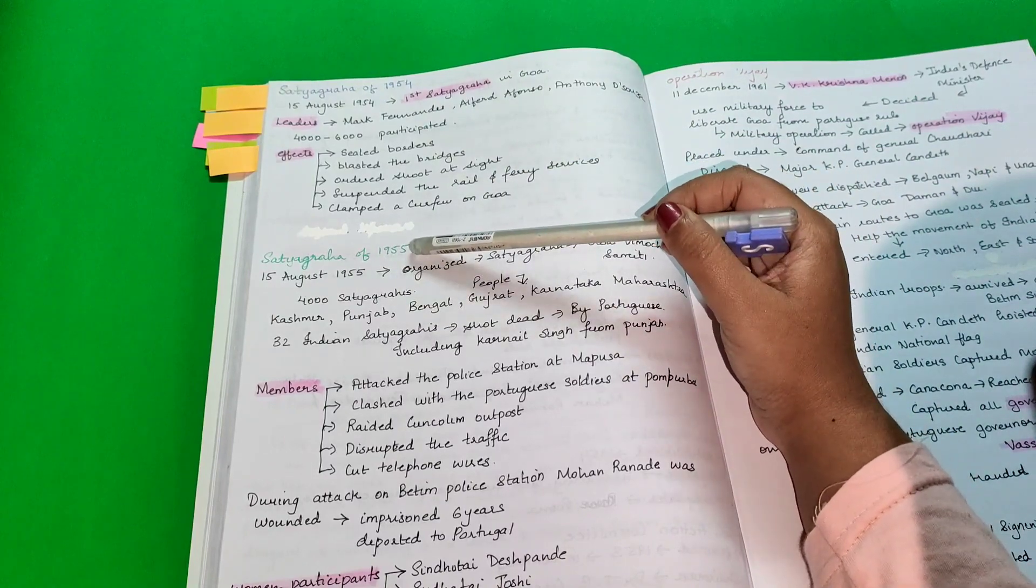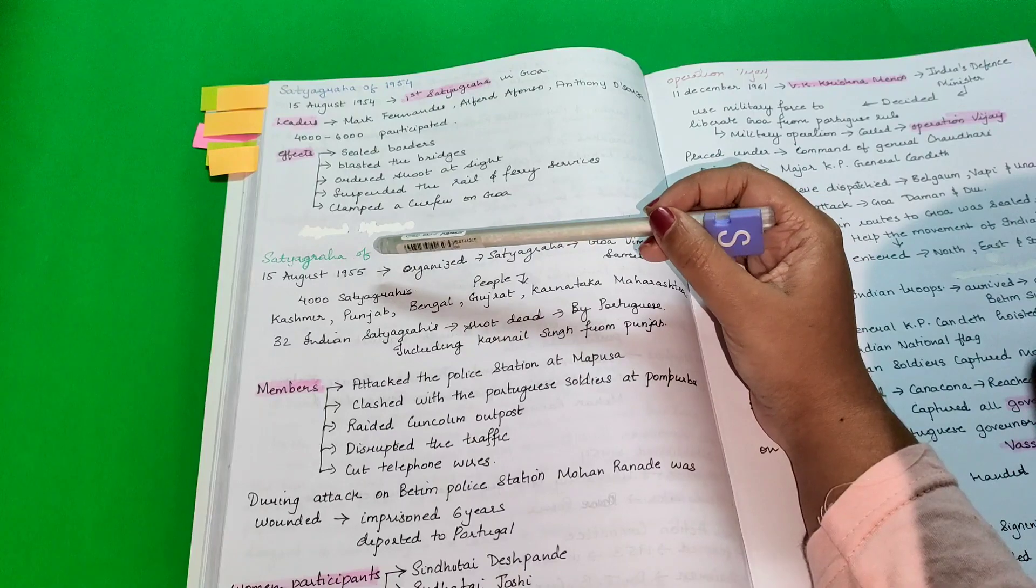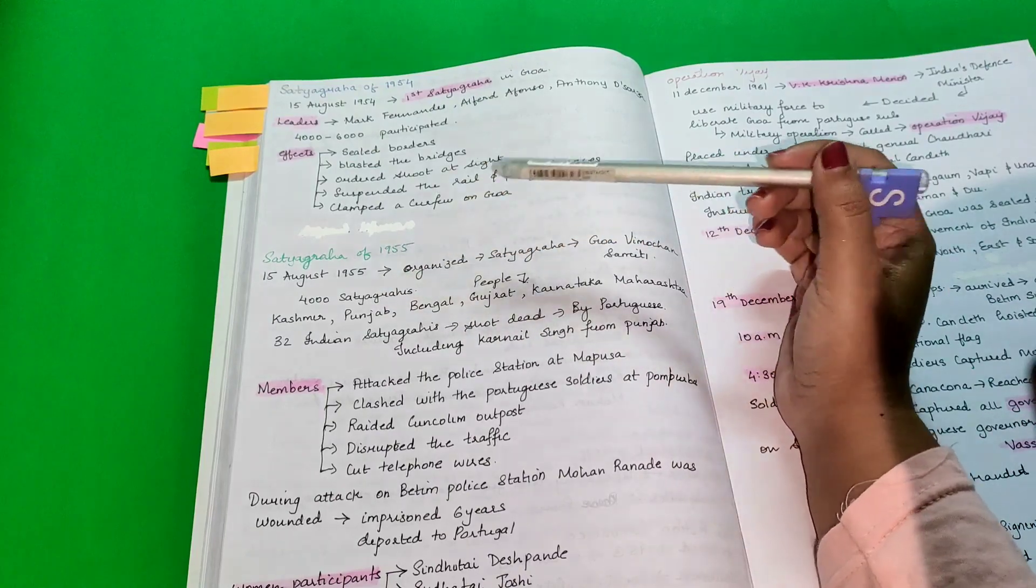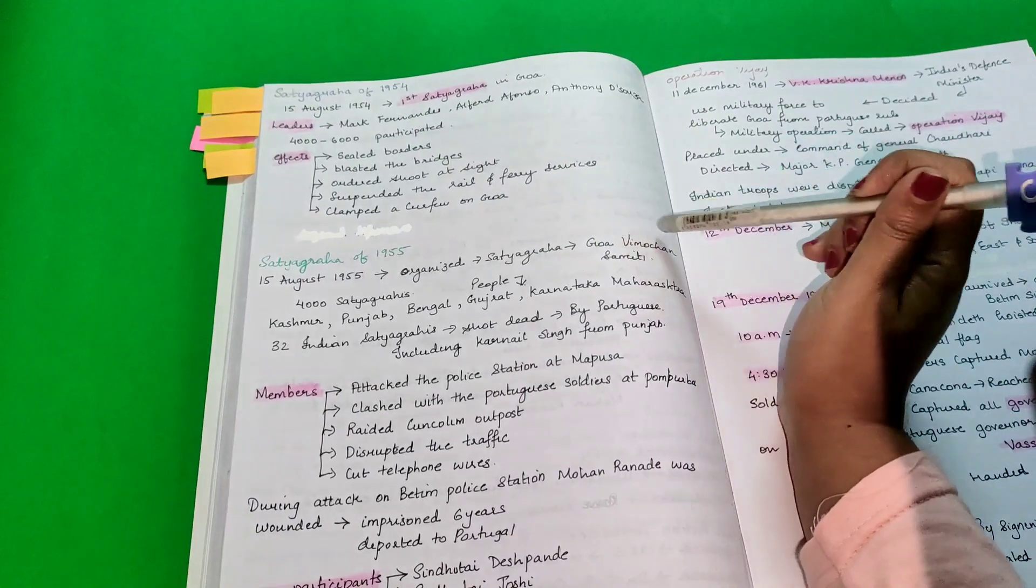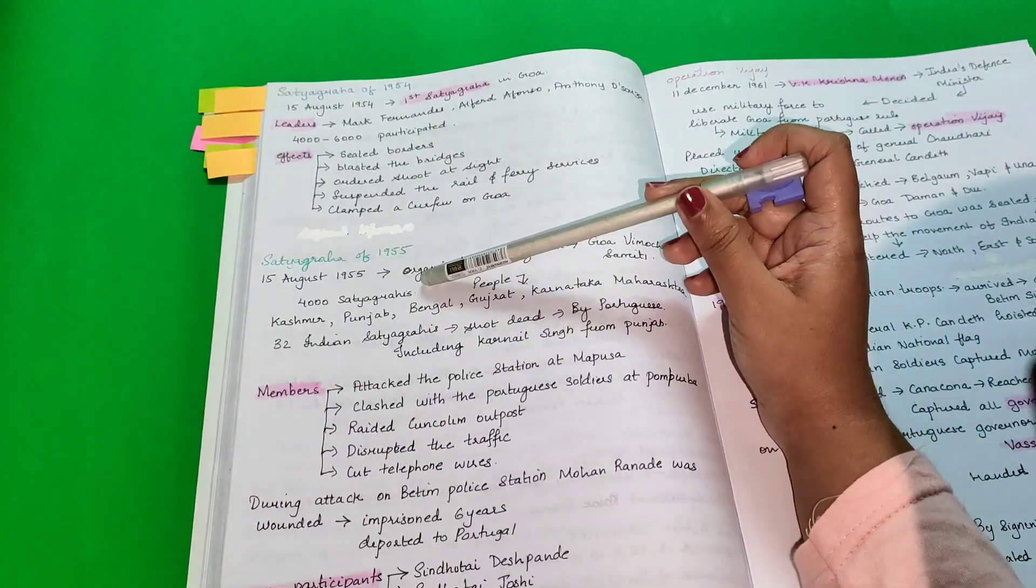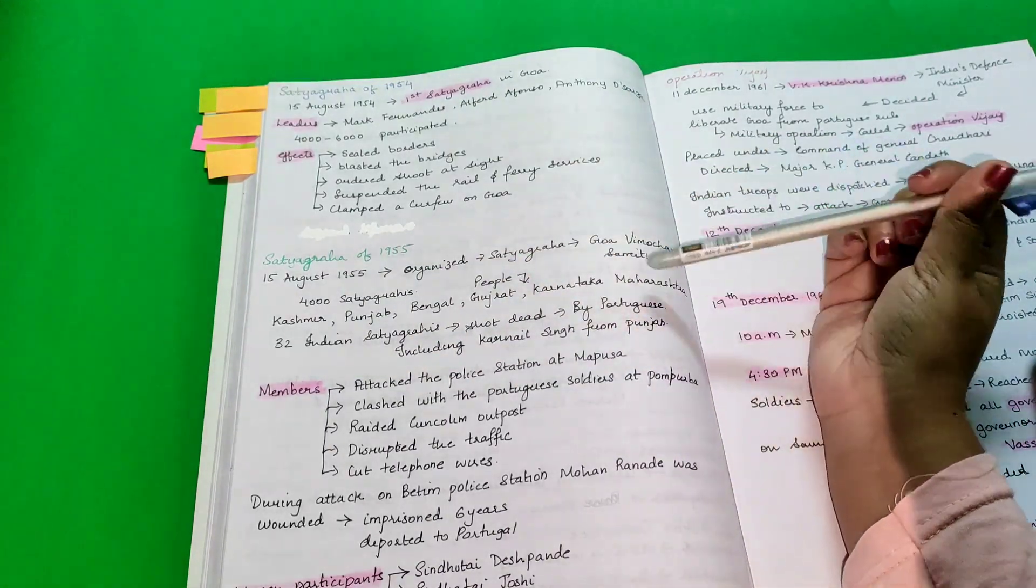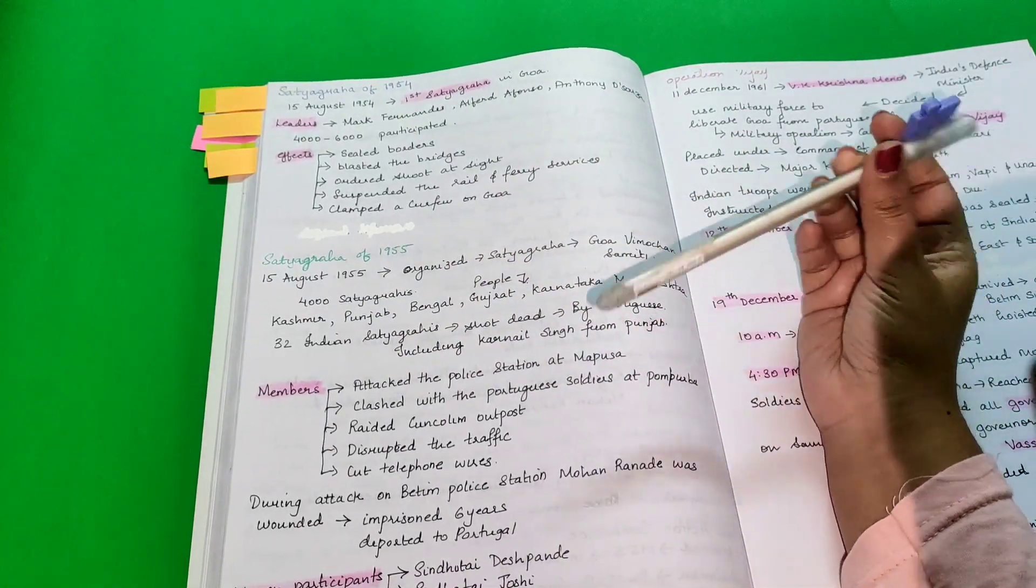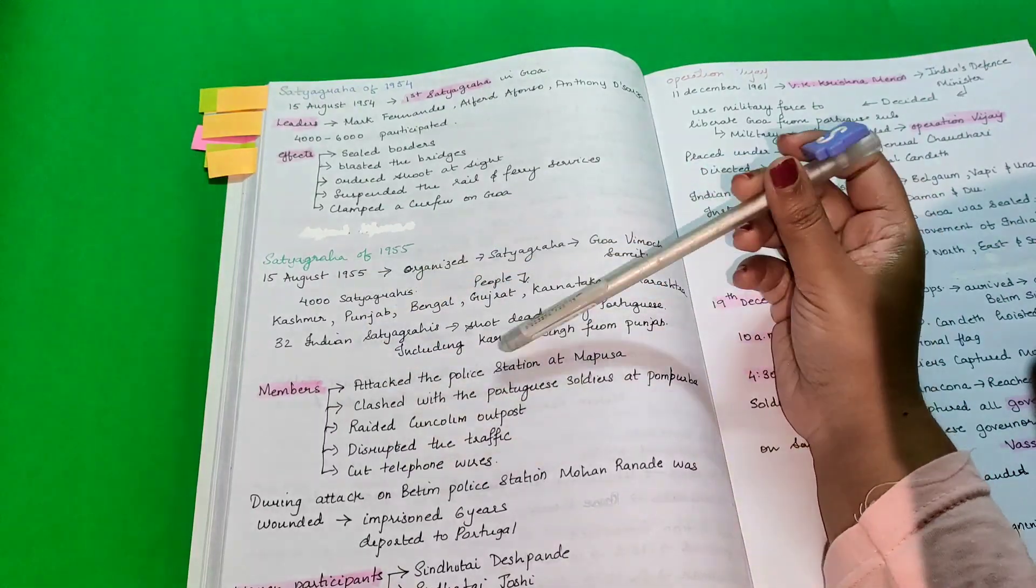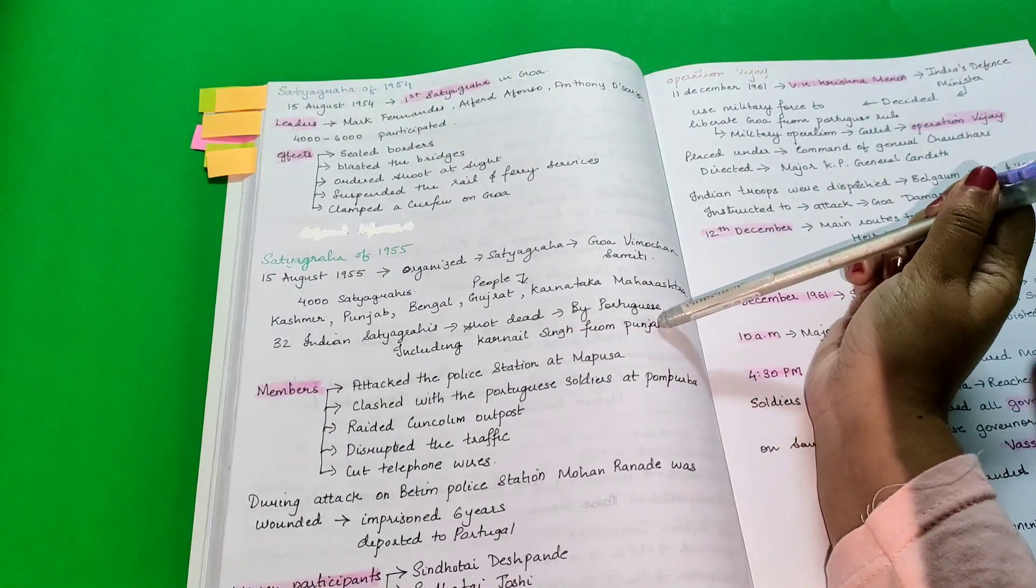Satyagraha of 1955. On 15 August 1955, they organized a Satyagraha by Goa Vimochan Samiti. In this, 4,000 Satyagrahas participated from Kashmir, Punjab, Bengal, Gujarat, Karnataka, Maharashtra. Thirty-two Indian Satyagrahas were shot dead by Portuguese, including Colonel Singh from Punjab.